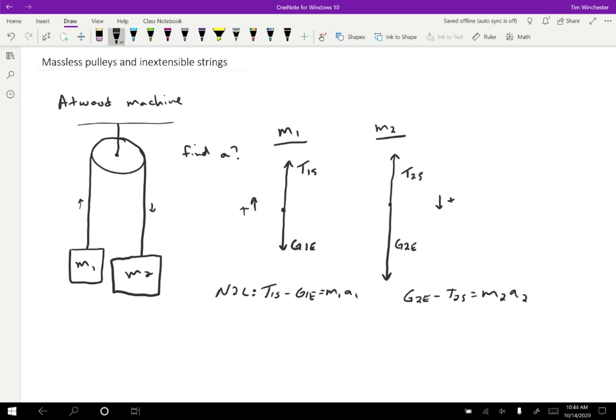I claim that the acceleration of mass one is going to be equal to the acceleration of mass two. Why should that be the case? Let's assume that the string is not stretchy. If the string is an ordinary string that is some fixed length, then the position of object two is just going to be whatever the position of object one is plus the length of the string L.